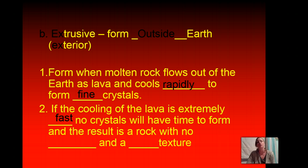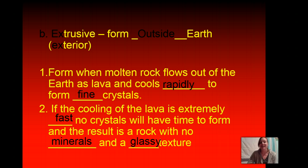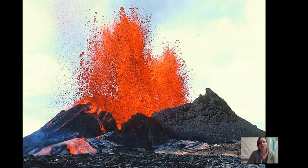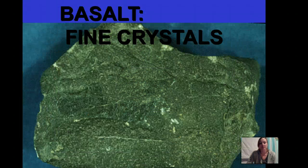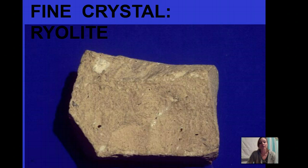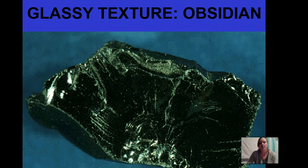If the cooling of the lava is extremely fast, no crystals will have time to form, and the result is a rock with no minerals and a glassy texture. Here's a picture of a volcano erupting — that lava will harden and form an igneous rock. How fast it cools will determine the size of the crystals. Here's another lava flow. These are pictures of rocks that have formed so fast they don't have large crystals — they have very, very small crystals.